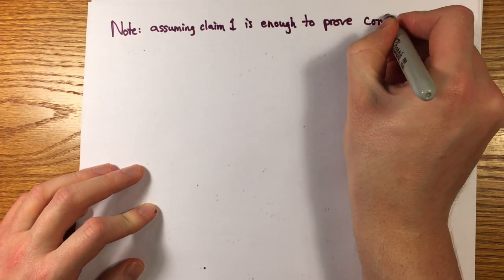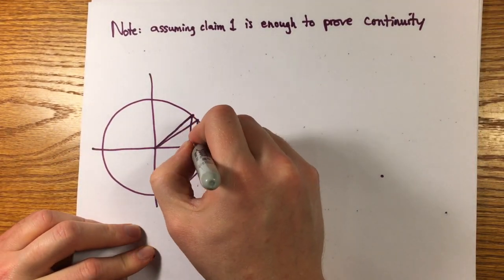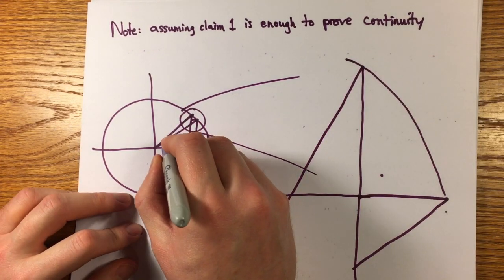Very quickly, let me draw a simpler picture that shows how the inequality in claim 1 is enough to show the continuity of sine and cosine.